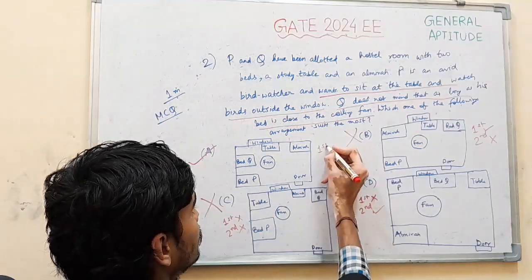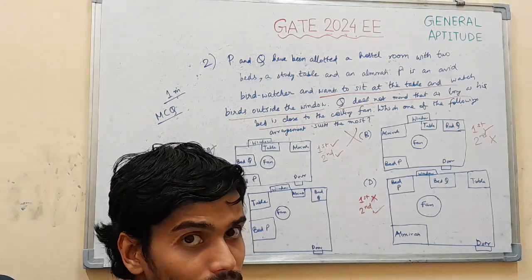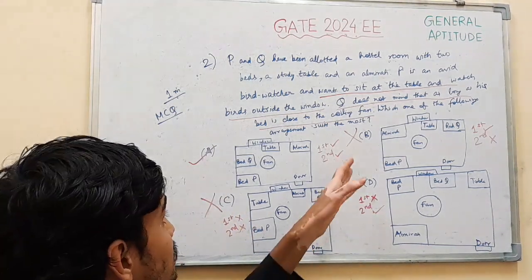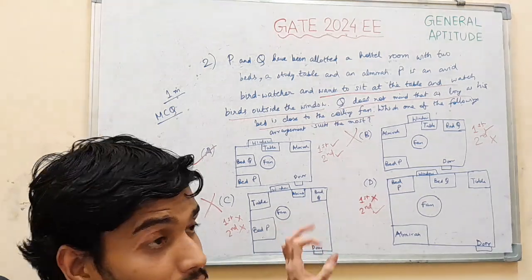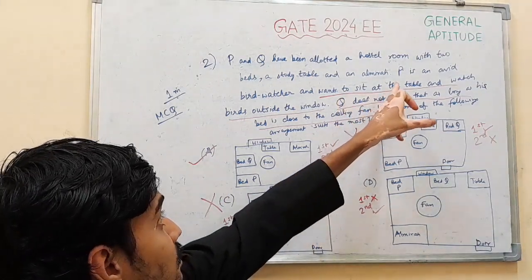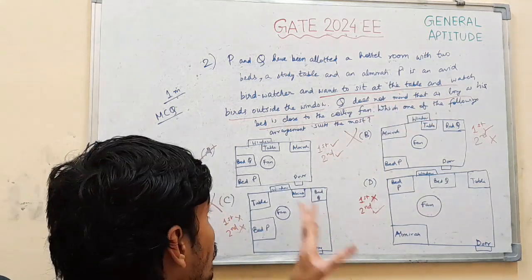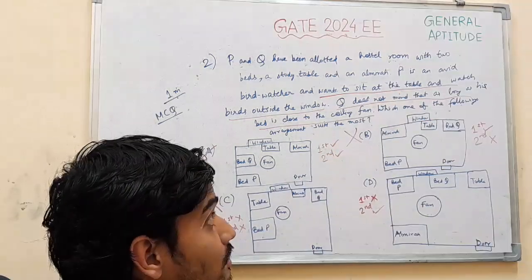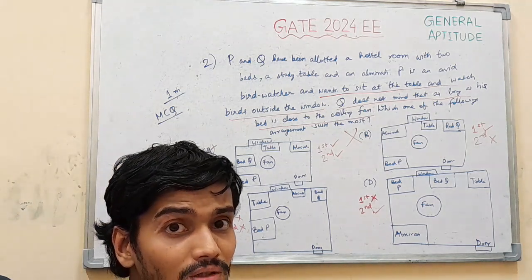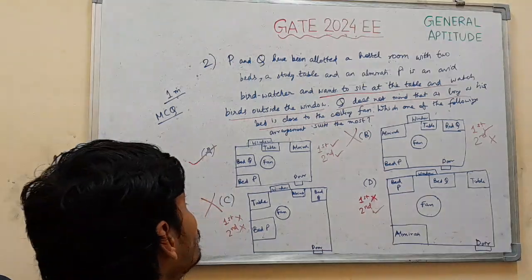And here both first and second are satisfied. So the right answer for this question is evident from the explanation, is option A, where it satisfies both the conditions for P and Q. So the right answer for this question is option A. As it's clear from the explanation, if you still have any doubts it is clear from the conditions. And that's all for the solution to this question number 2.